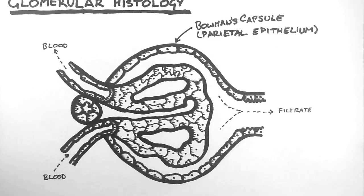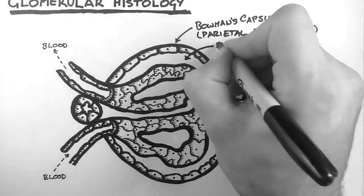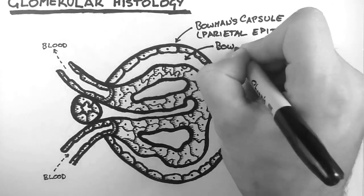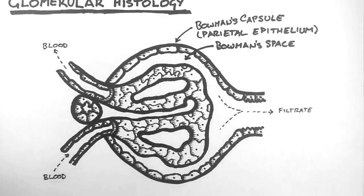Epithelium is one of the four basic types of tissue, the others being muscular, nervous, and connective tissue. Epithelium lines the surfaces of structures of the body. Between the parietal epithelium and the capillaries we have Bowman's space, which is the area into which filtrate collects before flowing into the proximal tubule.